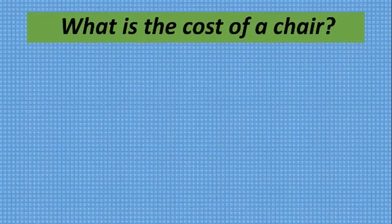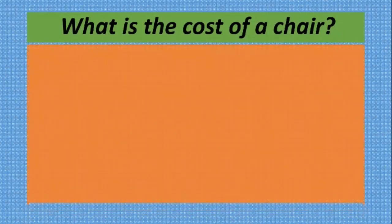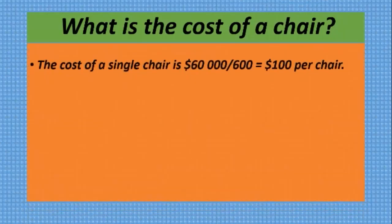So with your costing system you would have gathered all that information. Now, what is the cost of a single chair? The cost of a single chair would be the total cost divided by the number of chairs, which equals $100 per chair — sixty thousand divided by six hundred gives you one hundred.